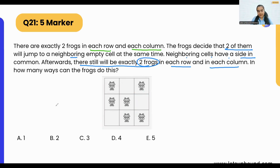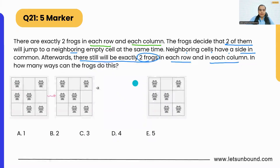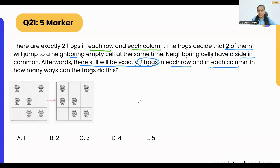Afterwards there will still be exactly two frogs in each row and in each column. So how many ways can the frogs do this? A frog can come down or go to the side. Each frog can move to its neighboring cells. Let me show you one example. This is the main picture provided in the question.